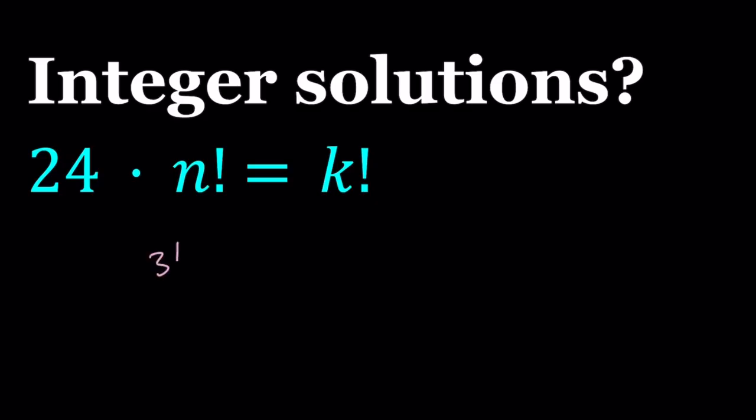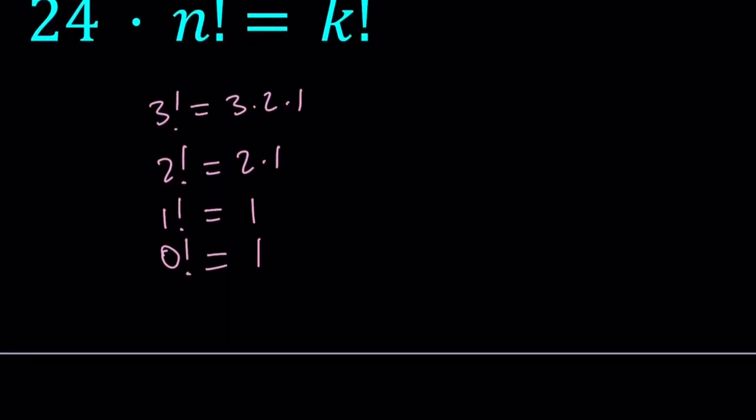For example, 3 factorial would be 3 times 2 times 1. 2 factorial would be 2 times 1. 1 factorial would be just 1. And 0 factorial is a special value defined as 1. In general, n factorial can be written as n times n minus 1 factorial.